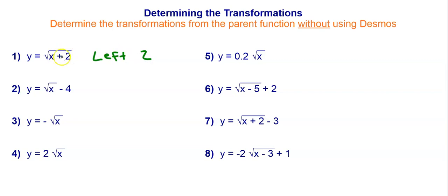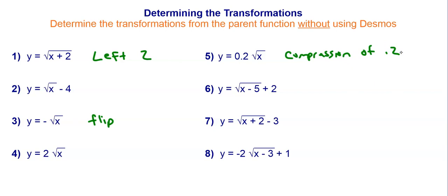When it's inside, it's the opposite of what you expect — a plus moves left and a minus moves right. Look at number 3: if there's a negative in front of the function, that means you're going to flip or invert the function. Number 5: when there's a 0.2 in front of the square root — and it's between 0 and 1 — it's a compression of 0.2, or one-fifth. Number 7 has two transformations: plus 2 inside means left 2, and minus 3 on the outside means down 3.